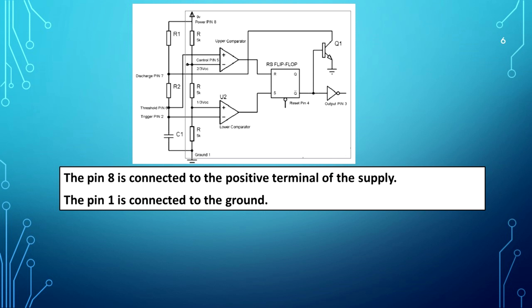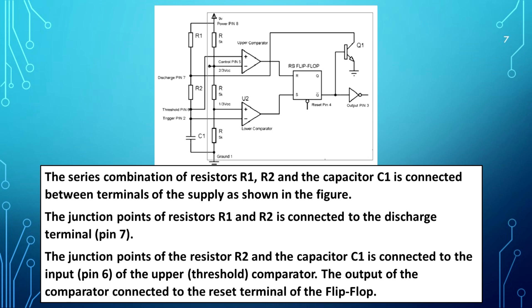Pin 8 is connected to the positive terminal of the supply. Pin 1 is connected to the ground. The series combination of resistors R1, R2 and capacitor C1 is connected between the supply terminals. The junction of resistors R1 and R2 is connected to the discharge terminal pin 7. The junction of resistor R2 and capacitor C1 is connected to input pin 6 of the upper threshold comparator, whose output is connected to the reset terminal of the flip flop.